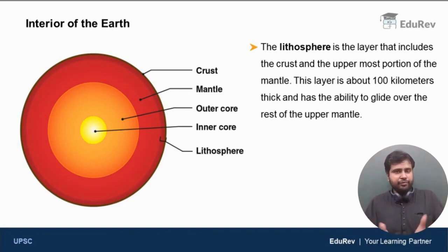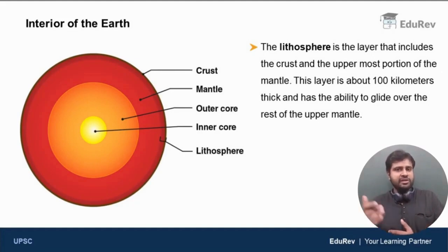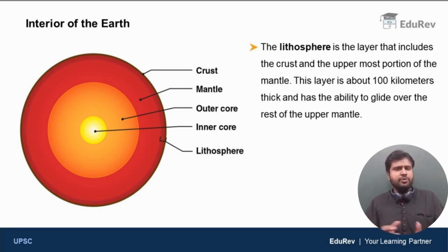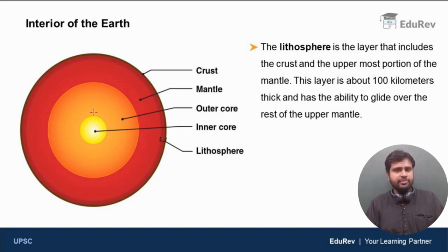The interior of the earth, like concentric shells, has the outermost shell as crust. Next, you have mantle which is around 2,900 kilometers thick, and inside we have the outer core which is liquid, and then you have the inner core which is solid.